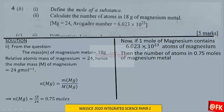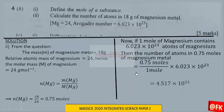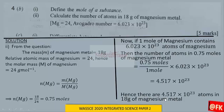Using ratio and proportion: 0.75 / 1 × 6.023 × 10²³ gives us 4.517 × 10²³. Hence there are 4.517 × 10²³ atoms in 18 grams of magnesium metal.